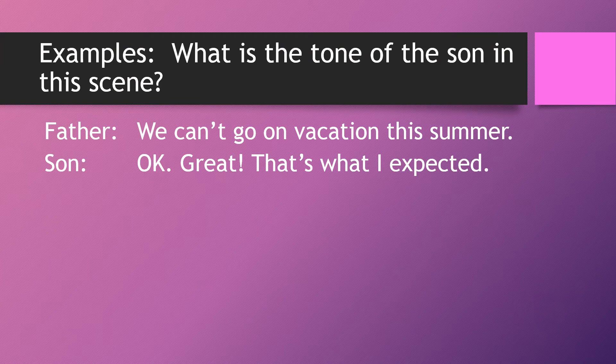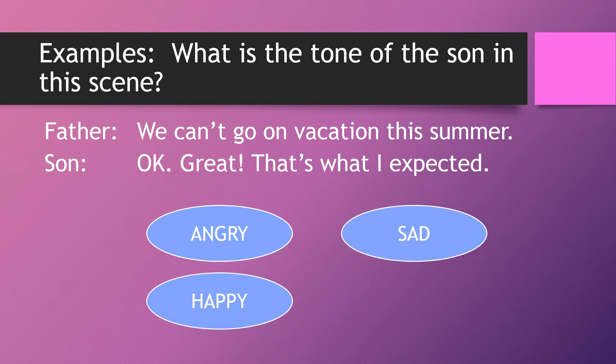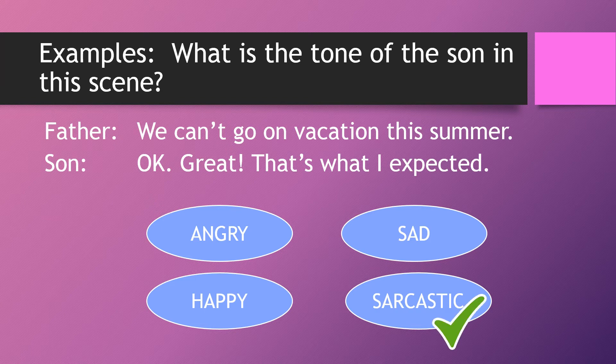Now let us look at some of the examples here. In the first example, it is asking us what is the tone of the son in the scene. The scene goes: 'We can't go on vacation this summer.' 'Okay, great. That's what I expected.' What is the tone of the son in the scene — is he angry, happy, sad, or sarcastic? The son in this scene is sarcastic.